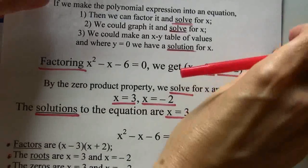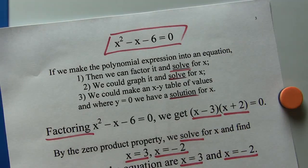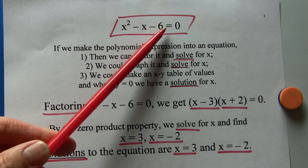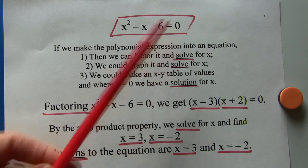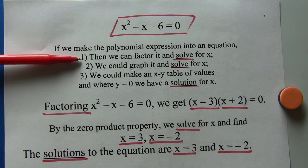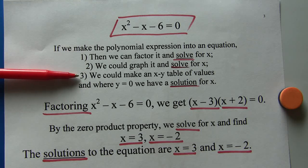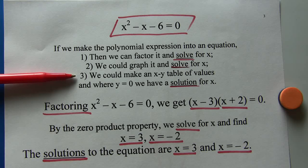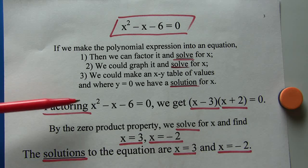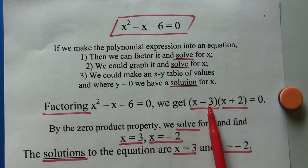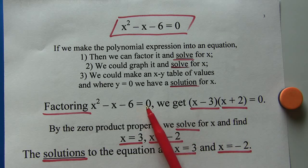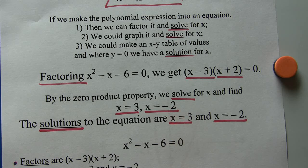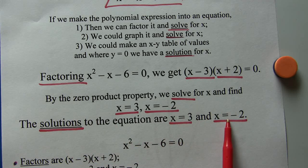We'll take that same polynomial. This time, we'll make it into an equation: x squared minus x minus 6 equals 0. If it's an equation, then we can factor it and solve for x. We could graph it and solve for x. We could make an xy table of values and where y is 0, we have a solution for x. We're not going to go into that. So let's just take this and factoring this equation we get x minus 3 times x plus 2, and we set it equal to 0. By the zero product property, we solve for x and we find that x is 3 and x is negative 2. So we say the solutions of this equation are x is 3 and x equals negative 2.